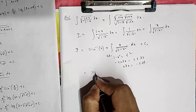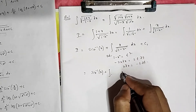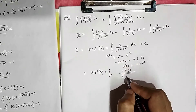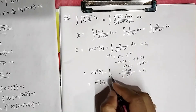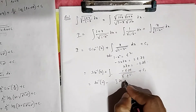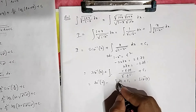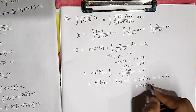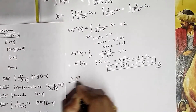Substituting, you get sin⁻¹(x) plus the integration of (−t dt)/√(1−x²). Since 1−x² = t², √(1−x²) = t, and t/t cancels, leaving integration of (−dt) = −t plus c₁. Replacing t with √(1−x²), the final answer is sin⁻¹(x) − √(1−x²) + c.